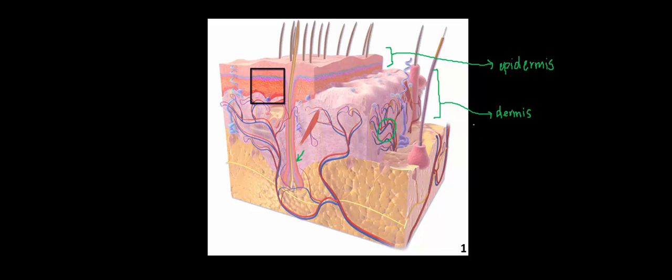Finally, below the dermis, we have the subcutaneous fat, often referred to just as the sub-q layer, which provides us with an energy store and insulation. I wanted to remind you of these three skin layers because it turns out skin cancer can originate from any one of them.